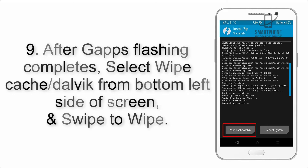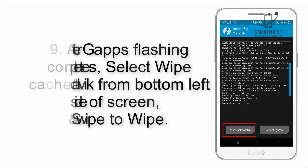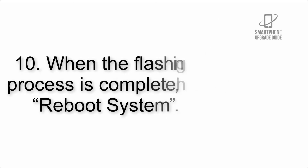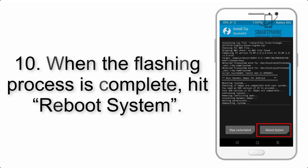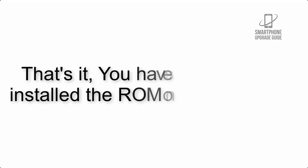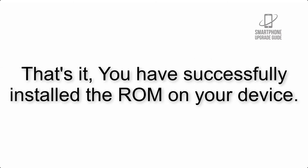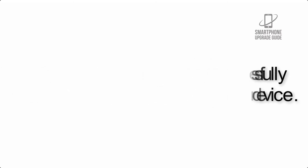Step 9: After GApps flashing completes, select Wipe Cache and Dalvik from the bottom left side of the screen and swipe to wipe. Step 10: When the flashing process is complete, hit Reboot System. That's it — you have successfully installed the ROM on your device.